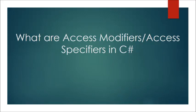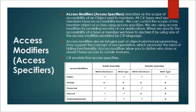Access modifiers, also called access specifiers, describe the scope of accessibility of an object and its members. All C-sharp types and type members have an accessibility level. We can control the scope of the member object of a class using access specifiers, and we use access modifiers for providing security of our applications.